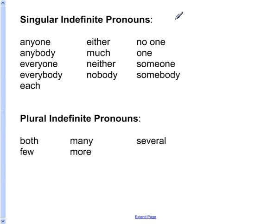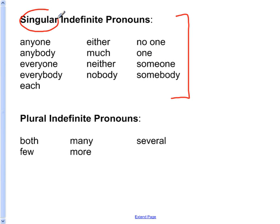Here is the list. Singular indefinite pronouns: anyone, anybody, everyone, everybody, each, either, much, neither, nobody, no one, one, somebody, someone. When you see one of these pronouns, they will always be singular. Plural indefinite pronouns — when you see one of these, they will always be plural: both, few, many, more, several.